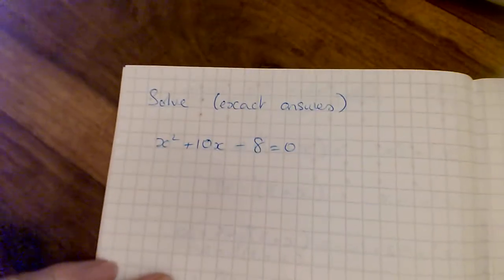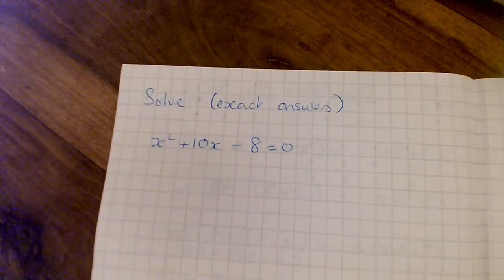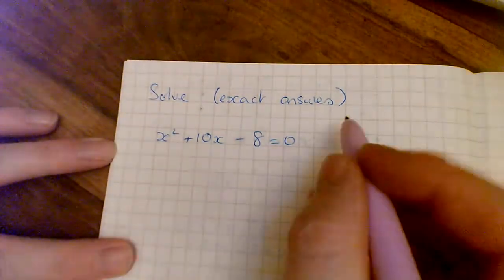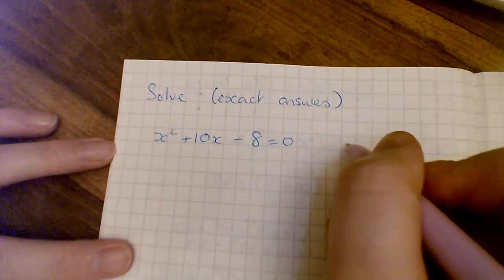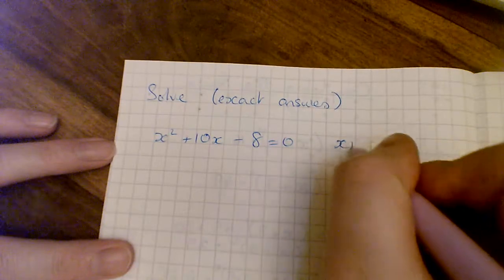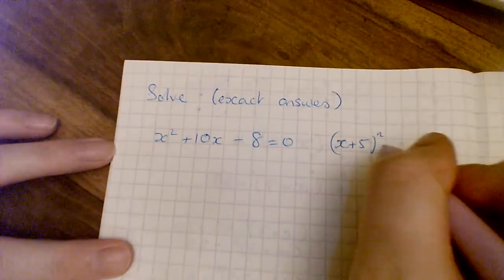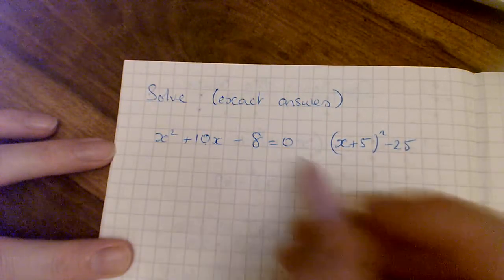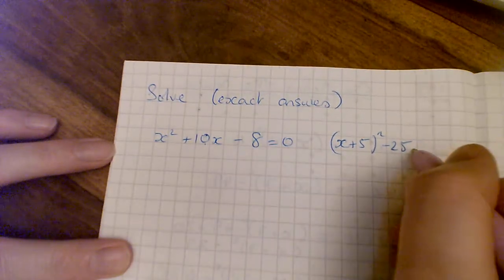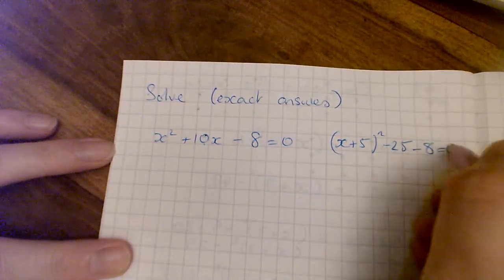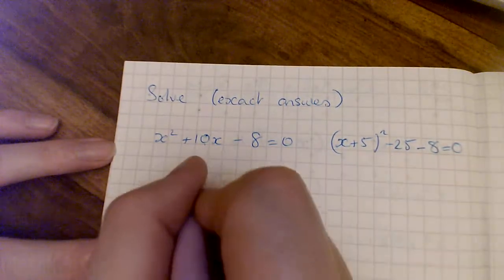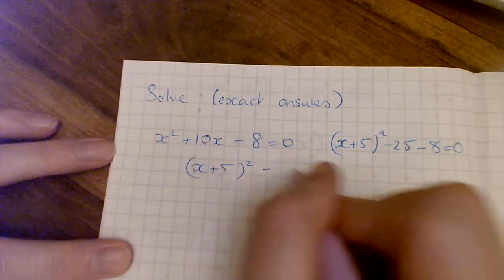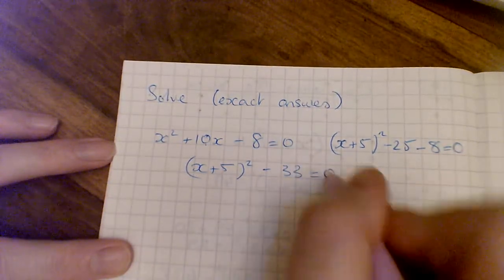Solving takes a little bit more work. First thing we're going to do is complete the square: for this one I'm going to have x plus 5 squared, take away 25 — half of 10 is 5, 5 squared is 25 — then put the minus 8 at the end and equals 0. Tidy that up: x plus 5 squared minus 33 equals 0.